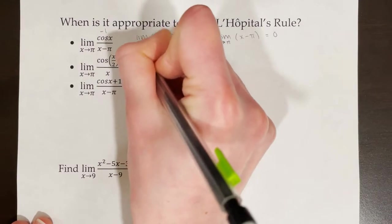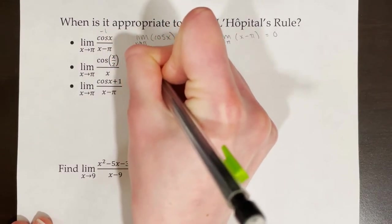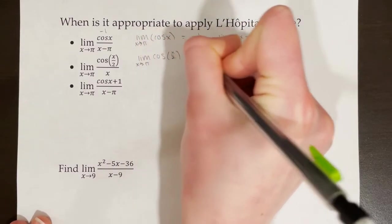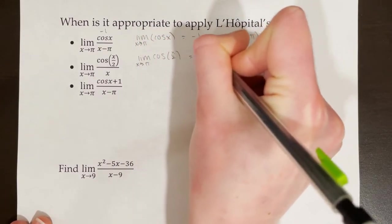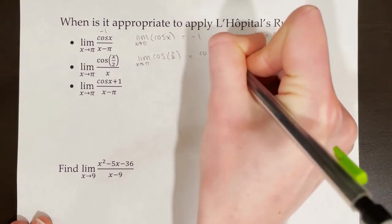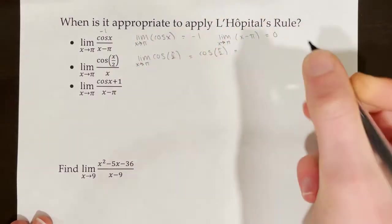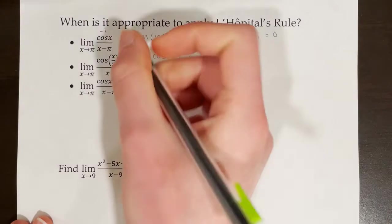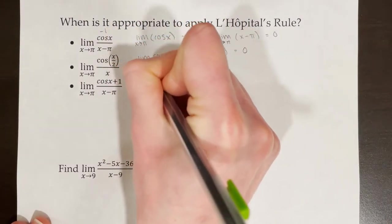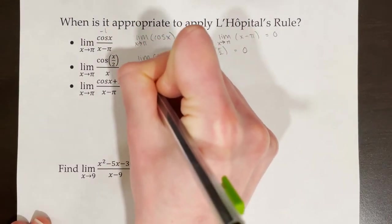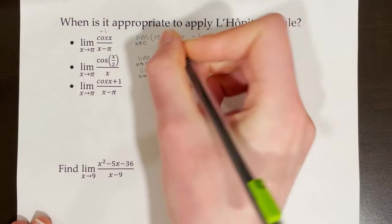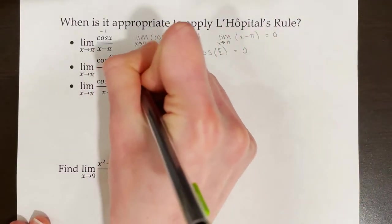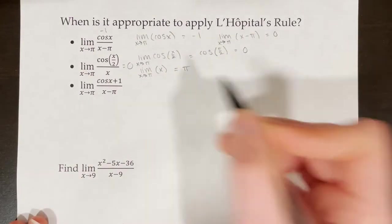Let's test the second one. For the numerator, we find the limit as x approaches π of cos(x/2), which equals cos(π/2) = 0. This is a potential contender for L'Hôpital's rule. Testing the denominator: the limit as x approaches π of x equals π. So this limit would be 0 over π, which equals 0 — not indeterminate form.